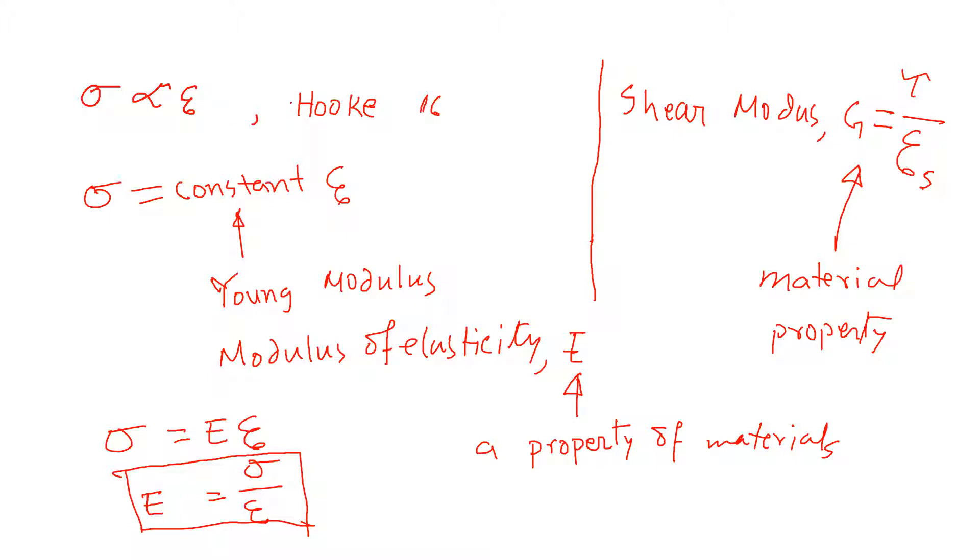Scientist Hooke, in the 16th century, developed this relationship and predicted this relationship. And then later on, Young determined the constant value.